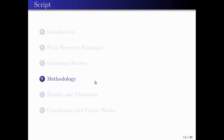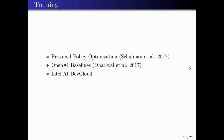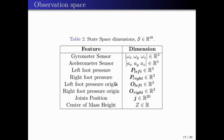The environment for this work is the RoboCup 3D Soccer Simulation League, shown in figure number six. We apply the Proximal Policy Optimization algorithm — specifically, we use the OpenAI Baselines implementation of PPO. OpenAI Baselines is a set of high-quality implementations of reinforcement learning algorithms. To speed up the training process, we used a cluster called Intel AI Dev Cloud. Our observation space, or state space, is composed of 39 elements.